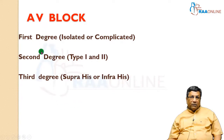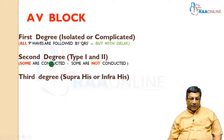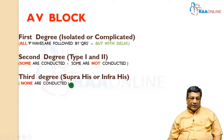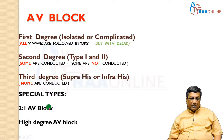Now we come to atrioventricular block, which can be first degree, second degree, or third degree. In first degree AV block, all P waves are conducted to the ventricle but with delay, and there is no pause. In second degree AV block, some P waves are conducted and some are blocked. In third degree AV block, none of the P waves are conducted, and the ventricles are depolarized by a secondary pacemaker — from the junction in supra-His block or from the ventricle in infra-His block. There are also two special types: 2:1 AV block and high-degree AV block, which do not fit neatly into these three degrees.